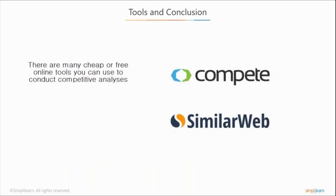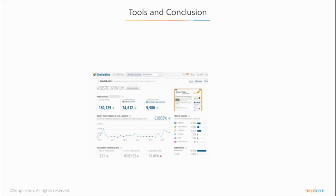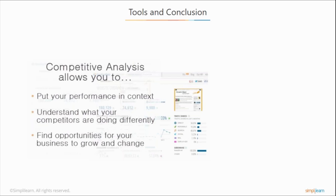Just like with online consumer surveys, there are many cheap or free online tools you can use to conduct your competitive analysis. In addition to Compete, SimilarWeb is also a great source of competitor data. Other tools I've used include SEMrush, SpyFu, and WuRank. Competitive analysis helps put your performance in context, understand what your competitors are doing differently, and uncover great opportunities for your business to grow and evolve.